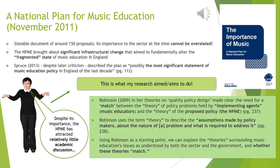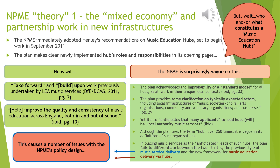Robinson makes clear the need for a match between the theory of policy problems held by the implementing agents — in this case, the music educators — and the theory of the proposed policy — in this case, the National Plan. Robinson's use of the term 'theory' describes the assumptions made by policy makers about the nature of the problem and what is required to address it. Basically, both actors have to be on the same page about what's causing the problems and how to fix them. Using Robinson as a starting point, we can explore whether the theories set out in the plan and those from the sector actually match.